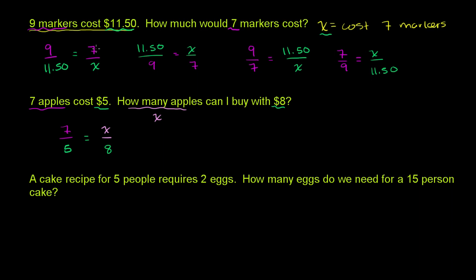Notice here, in the first problem the unknown was the cost, so we had number of apples to cost equals number of apples to cost. In this example, the unknown is the number of apples. You could also say the ratio between seven apples and x apples is going to be the same as the ratio between the cost of seven apples and the cost of eight apples. You could flip both sides of either of these equations to get more valid equations.